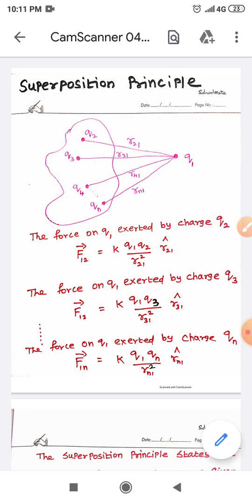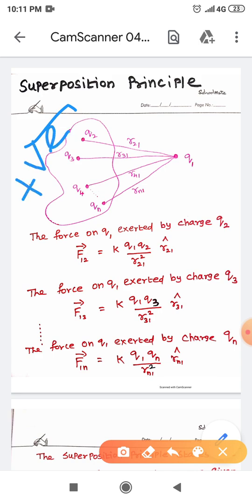You consider a situation as shown in the figure. The surface of the material contains n number of positive charges: Q2, Q3, Q4, Q5, Q6, Q7 up to Qn number of positive charges are there on the surface of this material. And you consider another one positive charge, Q1, which is located just out of this surface.